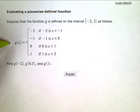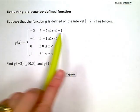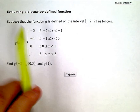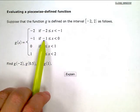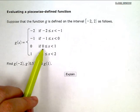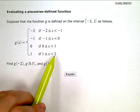So I have my function here. If x is between negative 2 and negative 1, then the output is negative 2. If my x is between negative 1 and 0, my output will be negative 1. If x is between 0 and 1, my output will be 0. And if x is between 1 and 2, my output will be 1.